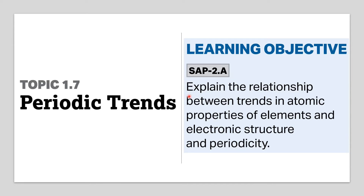The learning objective of this topic is to explain the relationship between trends in atomic properties of elements and electronic structure and periodicity. What is periodicity? What atomic properties are we talking about? What trends will we see in those atomic properties, and how will we connect those trends with electronic structure as well as periodicity? The answers to all these questions will be addressed in this video.